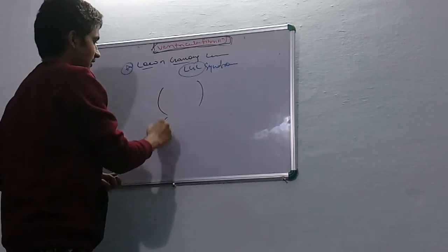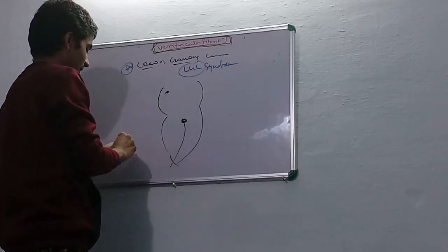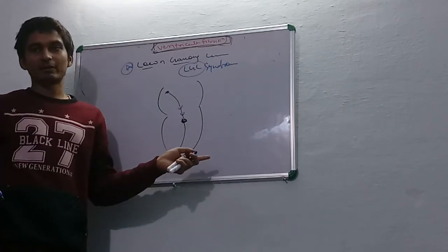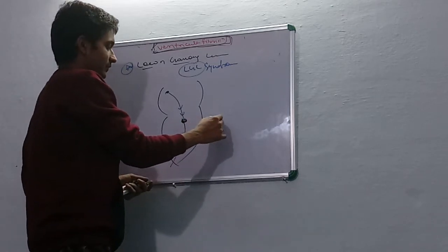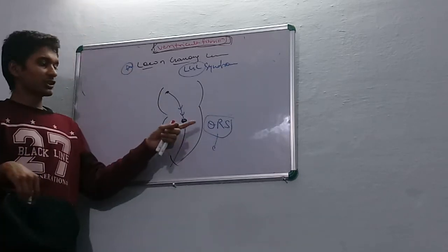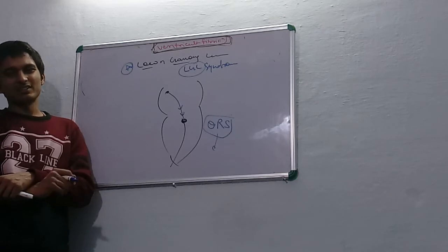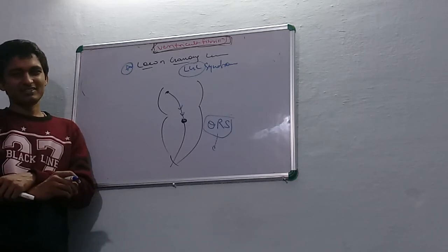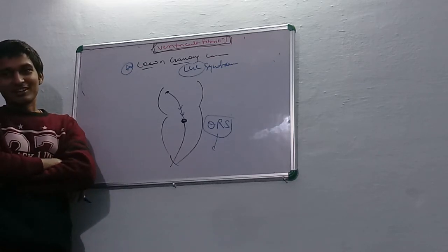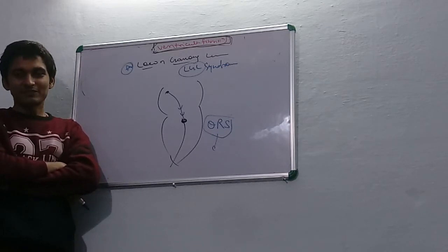In this syndrome, a new bundle is formed which conducts from the SA node directly to Purkinje fibers. In LGL syndrome, the QRS duration will be decreasing. Why decreasing? Because the rate is faster - the conduction happens faster.